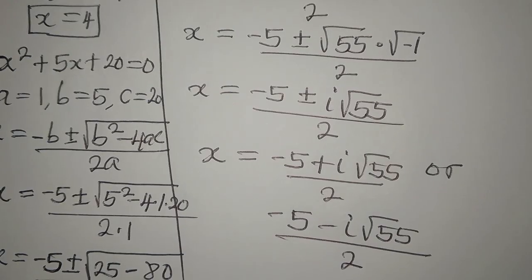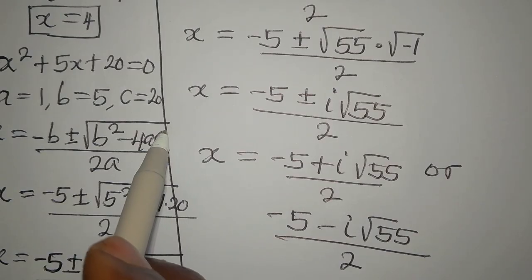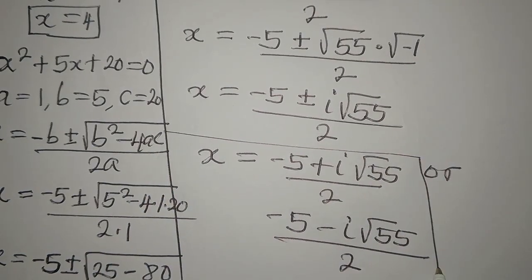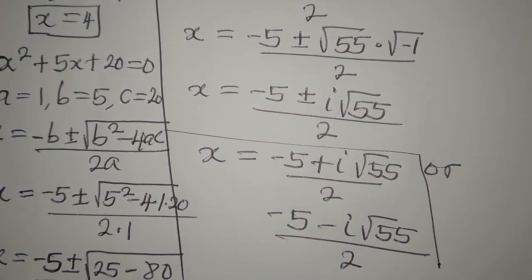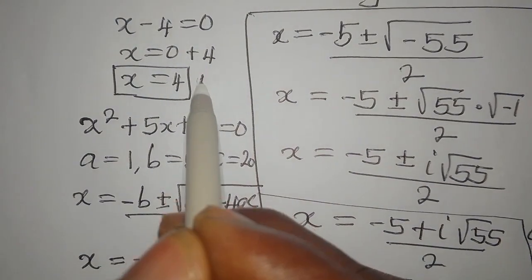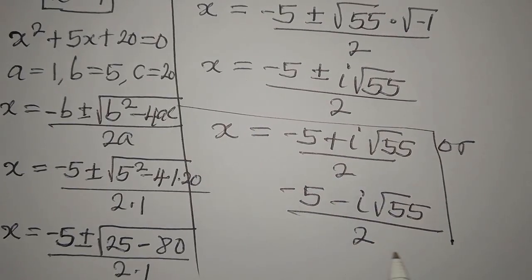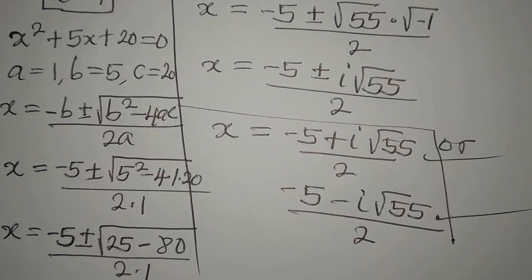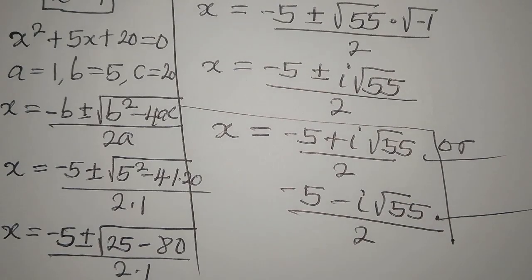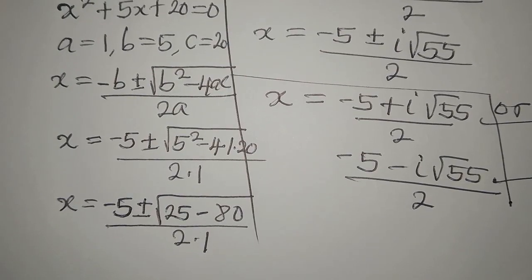So we have two more complex solutions. We had x equal to 4, and x equal to (minus 5 + i√55)/2 or (minus 5 minus i√55)/2, giving us three solutions total for the equation. Thank you for watching — subscribe to my channel so you can get more of my videos.